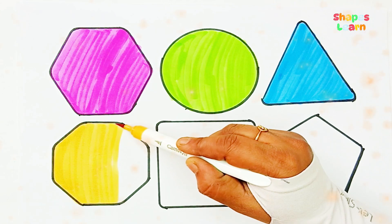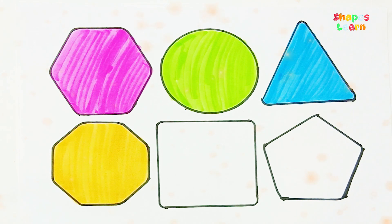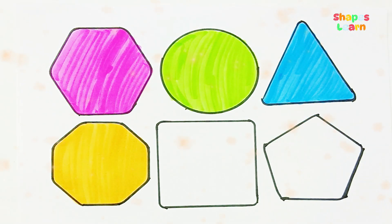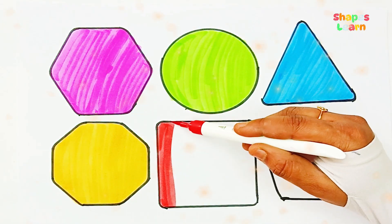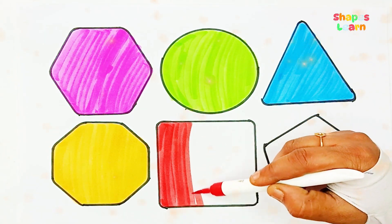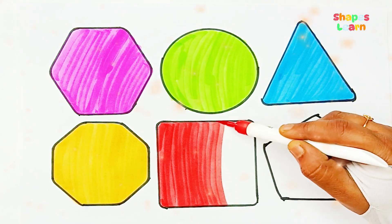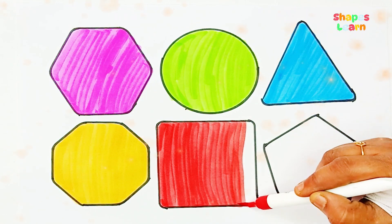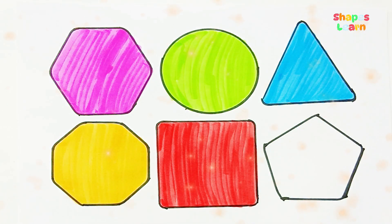Yellow color. Red color. Red color. Red color. A, B, C, D, E, F, G, H, I, J, K, L, M, N, O, P, Q, R, S, T, U, V, W, X, Y, and Z. Now I know my ABCs, next time won't you sing with me?